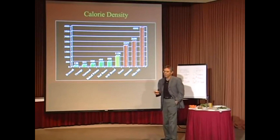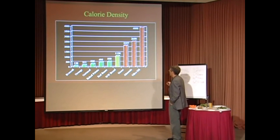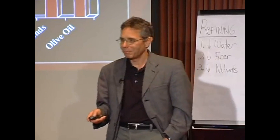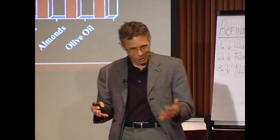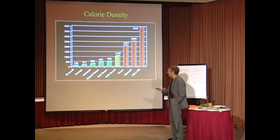Which side of the chart do you think the foods are easier to overeat on? The left side or the right side? The right side. We don't get a lot of broccoli bingers coming through here. How hard is it to overeat on broccoli? It's impossible.